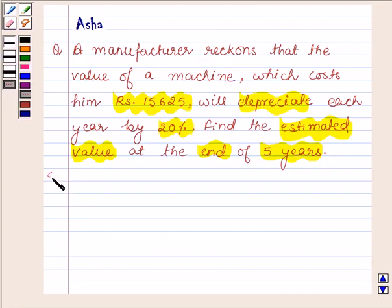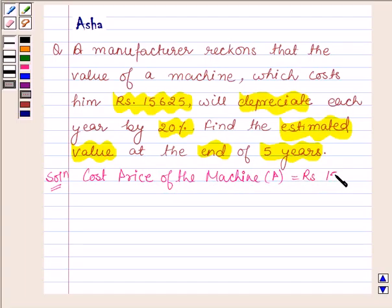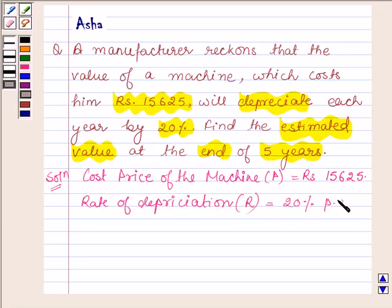Let us now begin with the solution. The cost price of the machine denoted by P is equal to rupees 15,625. Rate of depreciation, denoting it by capital R, is equal to 20% per annum.